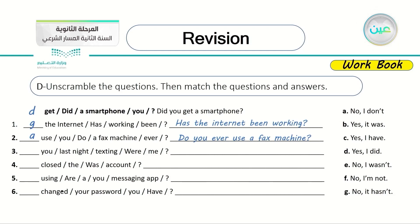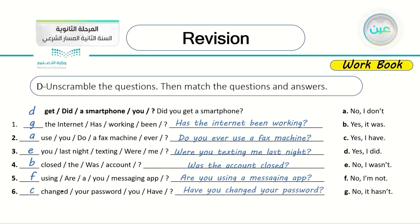Number three: 'you last night texting were me?' unscrambles to 'Were you texting me last night?' — answer E: 'No, I wasn't.' Number four: 'closed the was account' unscrambles to 'Was the account closed?' — answer B: 'Yes, it was.' Always begin with the auxiliary verb. Numbers five and six: 'Are you using a messaging app?' — answer F: 'No, I'm not.' And 'Have you changed your password?' — answer C: 'Yes, I have.'